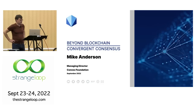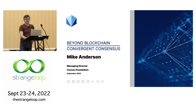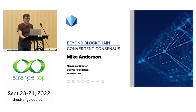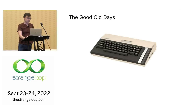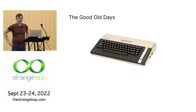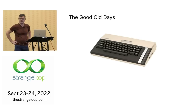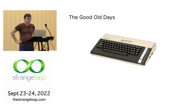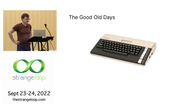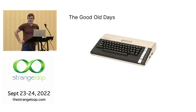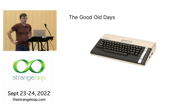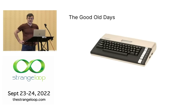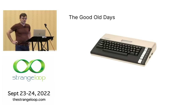I'm Mike Anderson, and today I'm going to be talking about convergent consensus, which is a key thing that we're doing as part of our work at the Convex Foundation. I want to start by going back to the beginning. I learned to code on an 8-bit computer — an Atari 800XL. It had a Motorola 6502 processor, and it was fantastic. There were no threads, no networking. You were in control of the whole universe. The only thing that caused interrupts was that annoying human user.